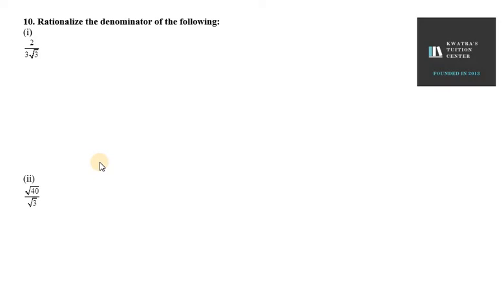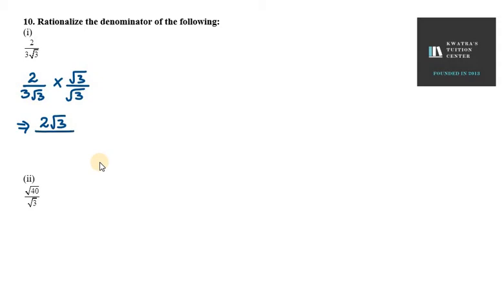In this part, there is no rational number. So what you need to do is multiply and divide the term with under root 3. What will happen if our number is rationalized? First look at the numerator — you will get 2 under root 3.